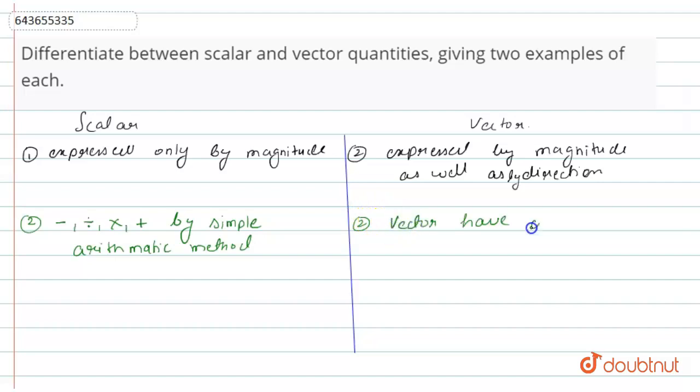Now the examples of scalars are mass of body, distance. These are examples of scalars. And examples of vectors are velocity, displacement.